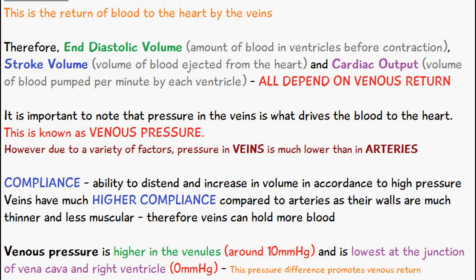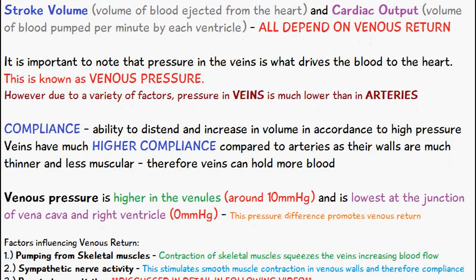There are different pressure levels in different regions of the veins. After capillaries come venules, then veins. Venous pressure is higher in the venules, at around 10 millimeters of mercury, and lowest at the junction of the vena cava and the right ventricle — right near the heart — where pressure is around zero millimeters of mercury. This pressure difference is what pushes and drives the blood back to the heart, promoting venous return.